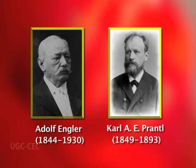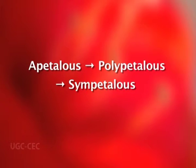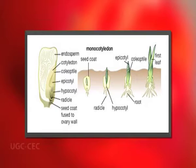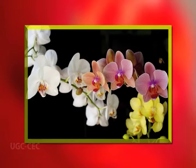The evolutionary trends as suggested by Engler and Prantl are: apetalous to polypetalous to sympetalous; actinomorphic to zygomorphic; unisexual to bisexual; hypogynous to epigynous. A significant feature of their system is that they placed monocotyledons before dicotyledons, and considered the orchids to be more highly advanced than the grasses.